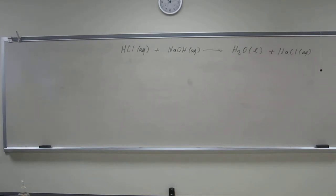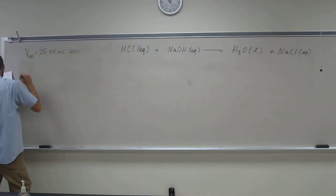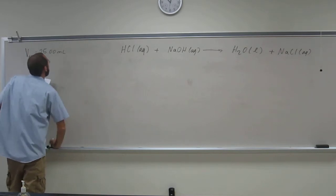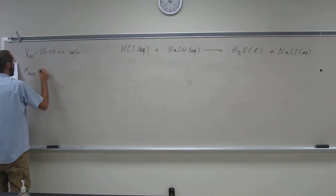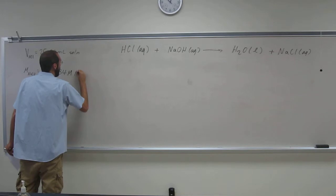So now let's write down the information that it gives us. So it says the volume of the HCl is 25.00 mils of HCl. It also says that the molarity of the NaOH solution is 0.09134 molar sodium hydroxide.